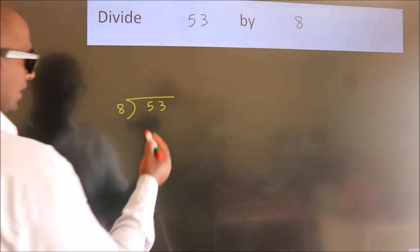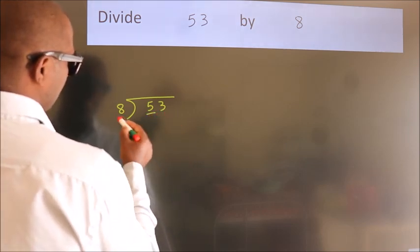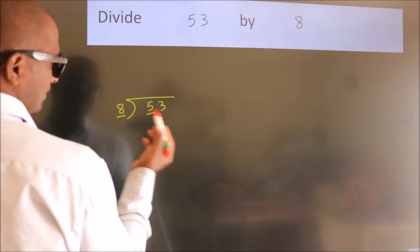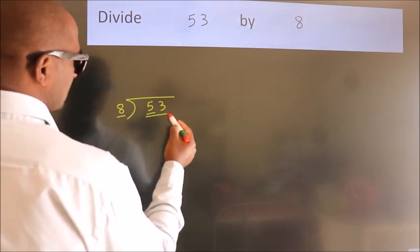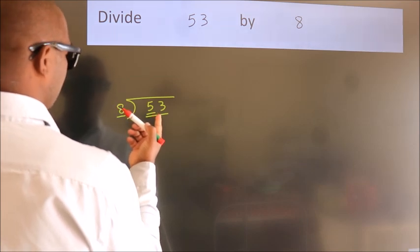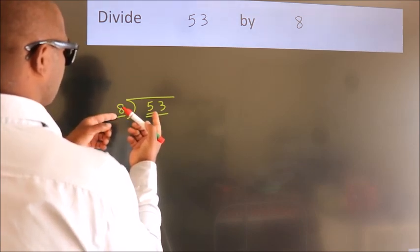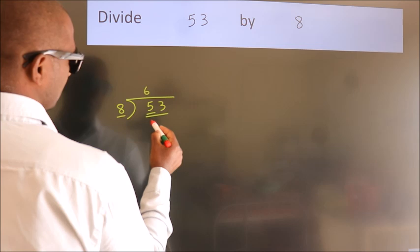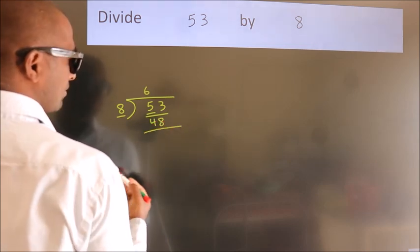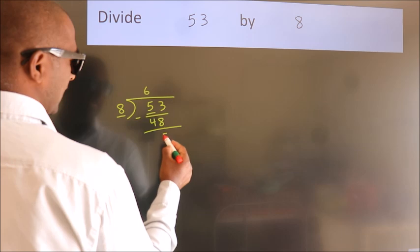Next. Here we have 5, here 8. 5 is smaller than 8. So we should take 2 numbers, 53. A number close to 53 in 8 table is 8 times 6, 48. Now we should subtract. We get 5.